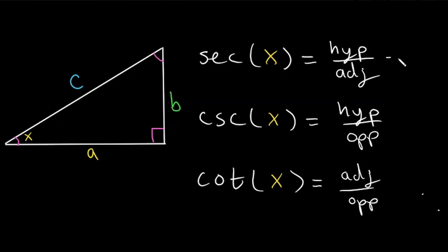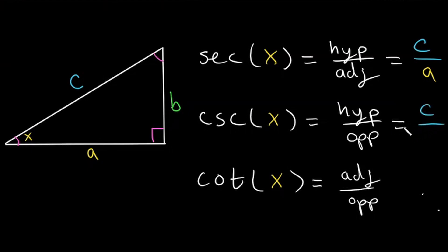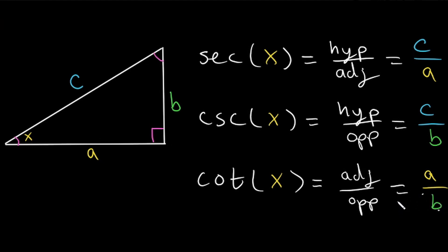So if we looked at our example right triangle, secant would be equal to the hypotenuse, which is C, divided by the adjacent side, which is A. Cosecant would be equal to the hypotenuse, C, divided by the opposite side, which is B. Cotangent would be adjacent over opposite, so our adjacent side is A divided by the opposite side, which is B. That's what it would look like for this specific right triangle.